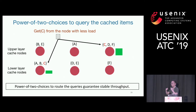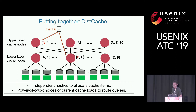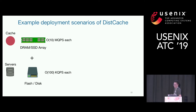Putting it together, DistCache has only two simple primitives: when doing cache allocation, use two independent hash functions to allocate cache items; and when querying items, use power-of-two choices based on current cache loads to route queries. There are many deployment scenarios — for cache nodes, we can use DRAM or SSD arrays as the front-end cache with flash or disk on the server side.